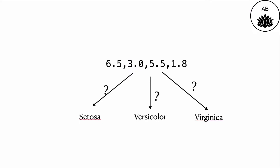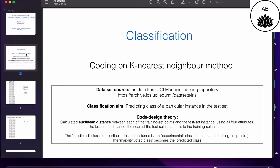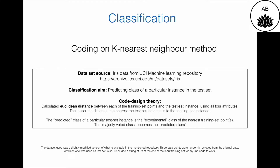This is a possible scenario where you have the attributes but not the class label. Just by looking at these numbers, it won't be easy to say whether it belongs to setosa, versicolor, or virginica. We will be using the k-nearest-neighbor method for our classification problem. We will calculate the Euclidean distance between each of the training set instances and the test set instance using all four attributes, then pick the seven nearest neighbors — that is why this method is known as the k-nearest-neighbor method.